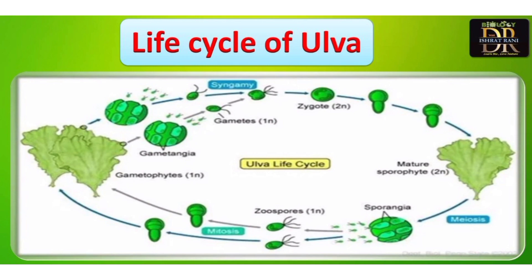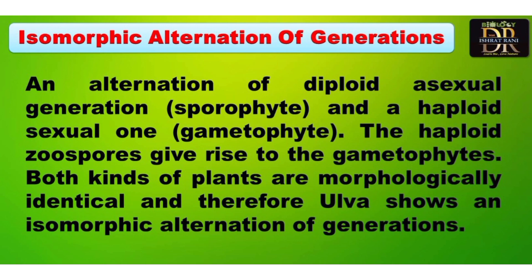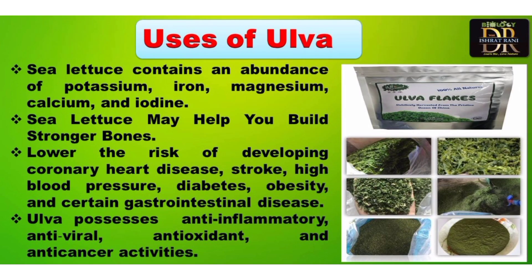Here again is a diagram of the life cycle of Ulva showing alternation of generation — the sporophyte alternates with the gametophyte and vice versa. Regarding the uses of Ulva: it is edible and rich in potassium, iron, magnesium, calcium, and iodine. It can help make bones stronger and reduce the risk of high blood pressure, diabetes, obesity, and gastrointestinal disorders. It also possesses anti-inflammatory, antiviral, antioxidant, and anti-cancerous activity.